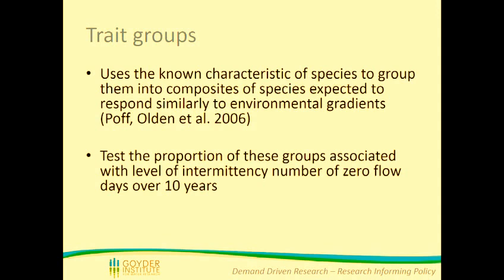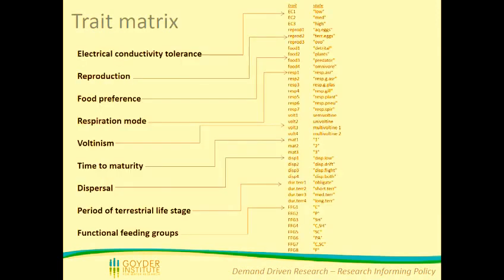Trait groups use known characteristics of species to group them into composites of species expected to respond similarly to environmental gradients. This type of work has been happening for a while across a whole lot of different taxa — I've also done some work on vegetation in the Coorong using trait analysis. We sought to test the proportion of these trait groups associated with levels of intermittency described by the number of flow days over 10 years, using samples from flow gauges that had that number of years of data.